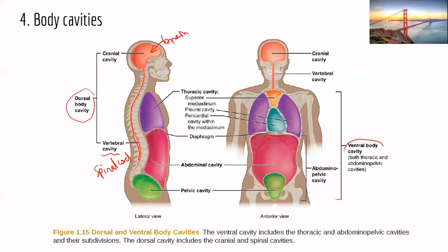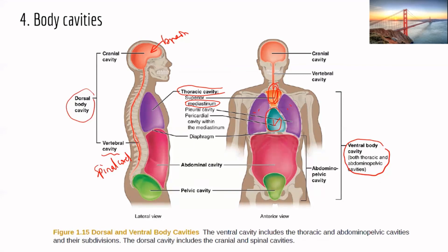The ventral body cavities are on the belly or anterior side. The first is the thoracic cavity, covering the chest area. The main organs in the thoracic cavity are the heart and the lungs. Within the thoracic cavity we further divide into smaller cavities. The mediastinum is the middle part, and that's where the heart is located.